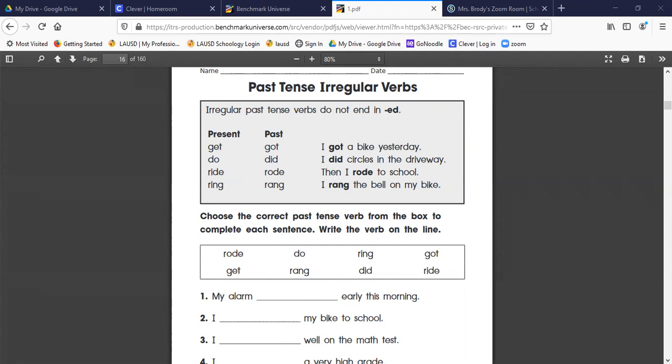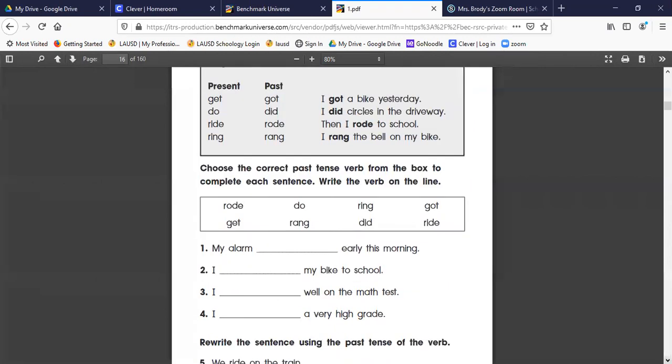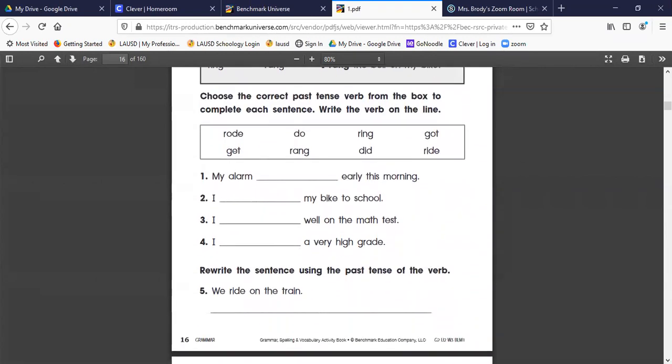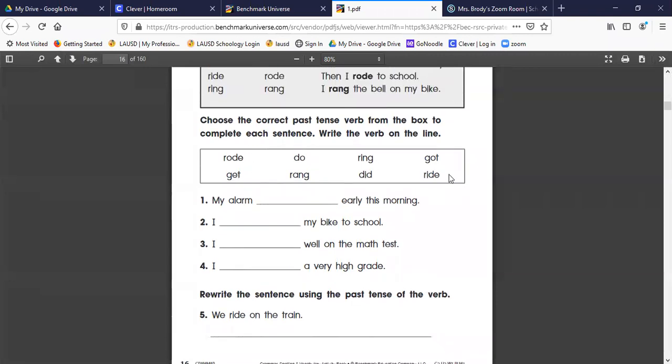I'm gonna scroll on down and we have these words in the box: rode, do, ring, got, get, rang, did, ride. Now we want to make sure we're using the past tense, so we are going to be using rode, got, rang, and did - those are the ones that we want to use for our sentences.